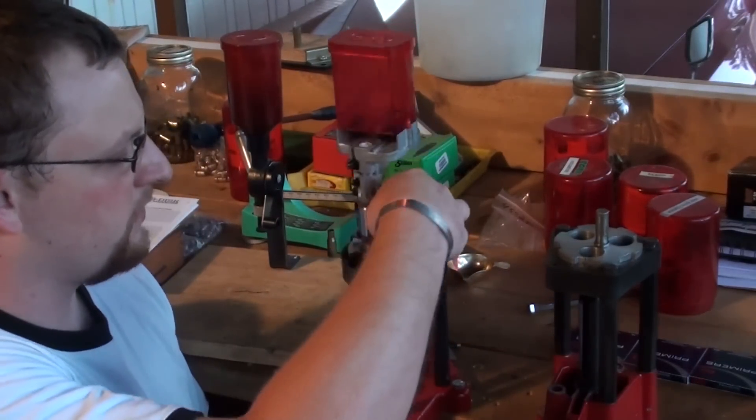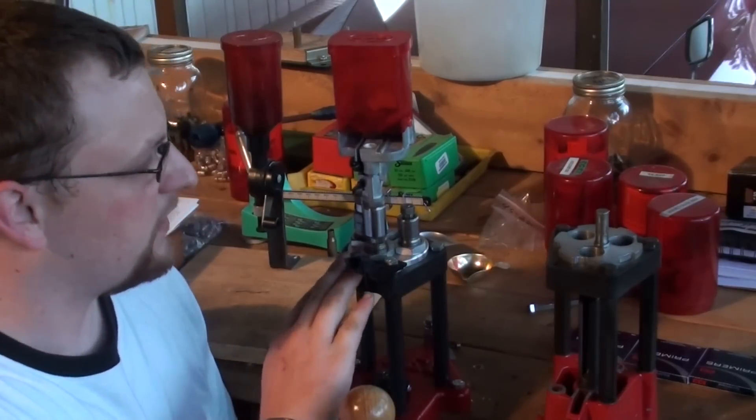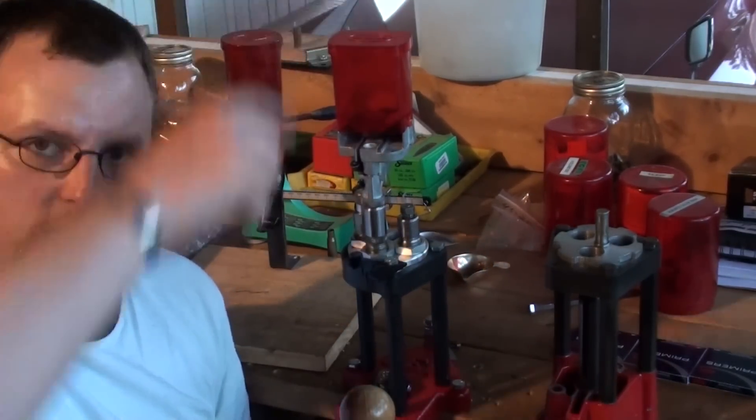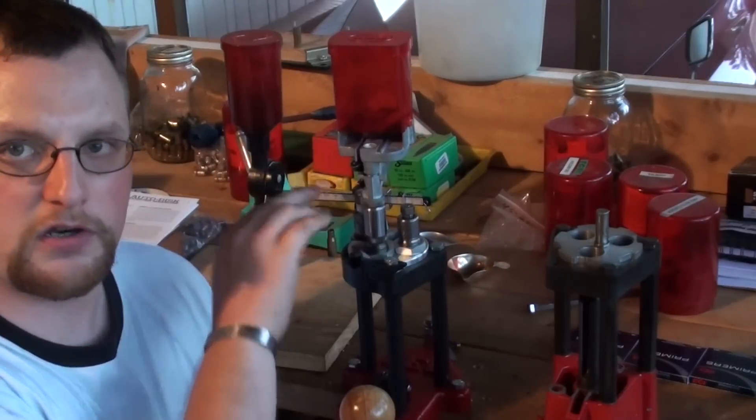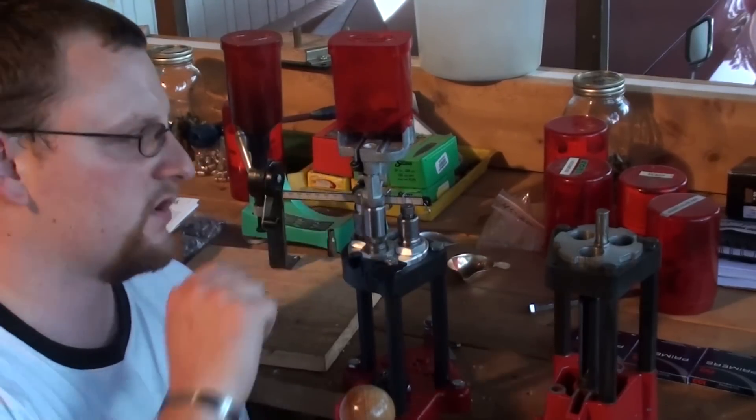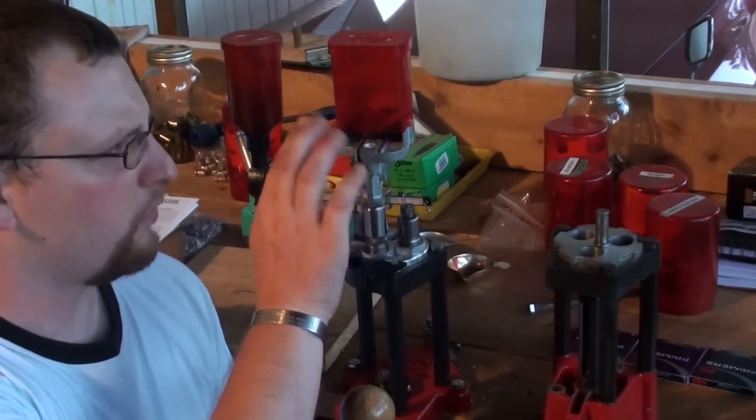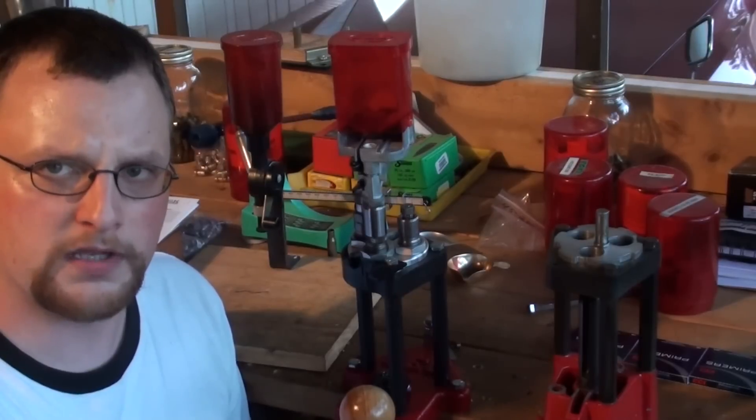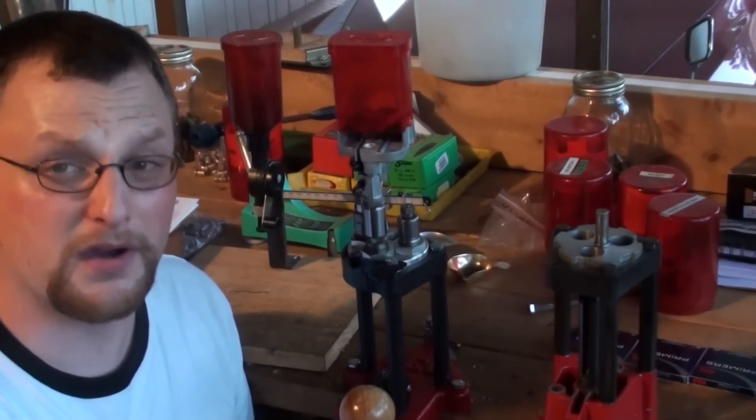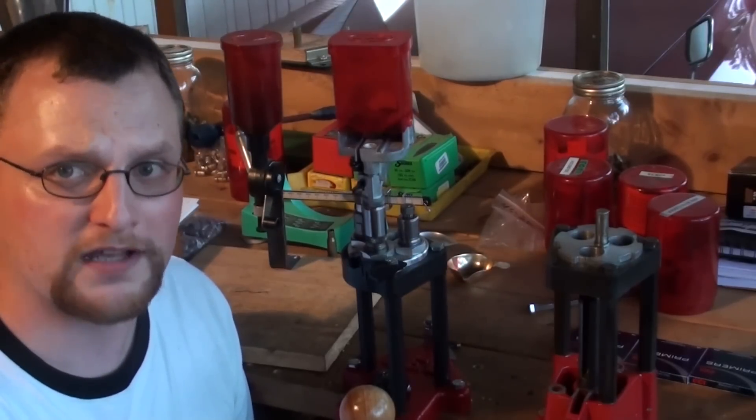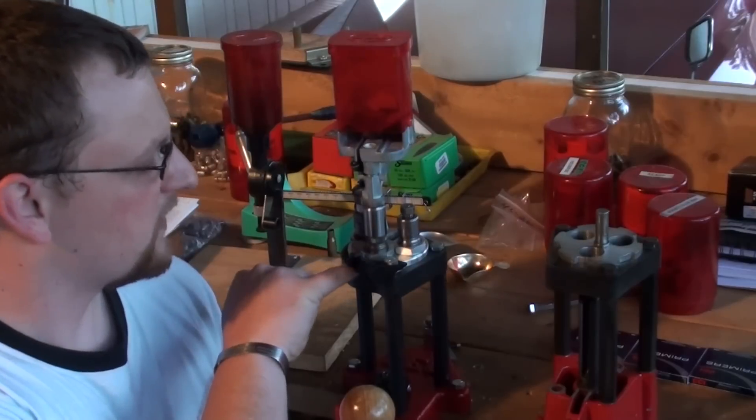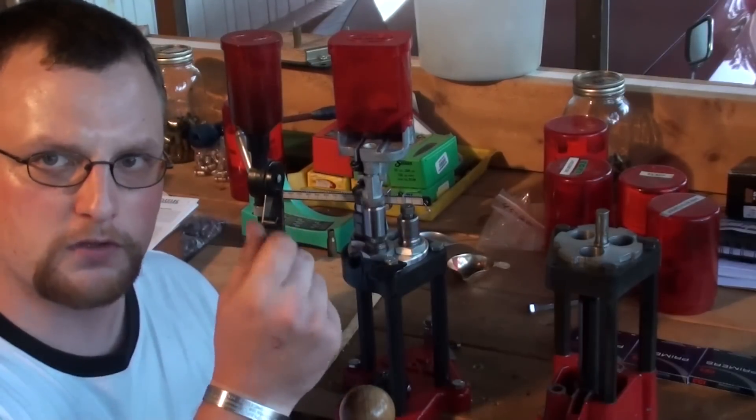Now one thing that I wish Lee would have made a little bit more known with this particular setup, this press comes set up, a good way to run this press is to use the Lee Auto Disc Powder Measure here. Lee sells this in the version you see here with the disc, and then they also sell one that has an adjustable disc, the Pro Auto Disc Powder Measure. I haven't tried it yet, but for what this just normal auto disc powder measure does, so far it really does a great job.